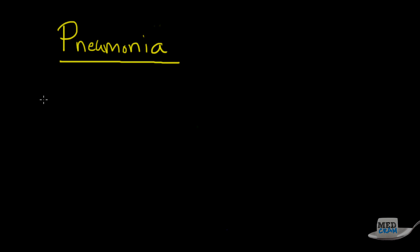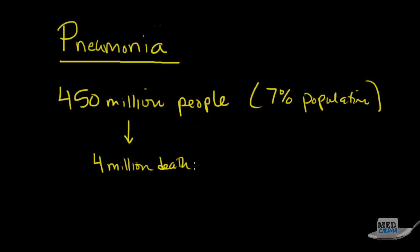Pneumonia globally affects about 450 million people a year. That's a huge amount of people, about 7% of the population. Out of those 450 million people who develop pneumonia, there's only about 4 million deaths. So we do treat these things, especially now with antibiotics and specifically with vaccines, which we'll talk about in a bit.